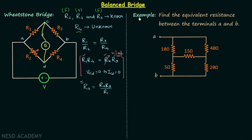Now we will solve one example problem where we are required to find the equivalent resistance between terminals A and B. This point will be called A because it has the same potential as point A. Similarly, other points are labeled: this point is A, this point is B, this point is B, this point is C, and this point is D.